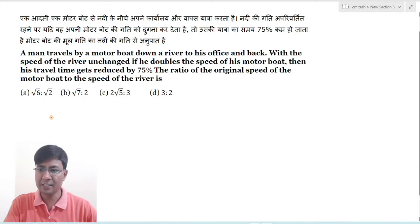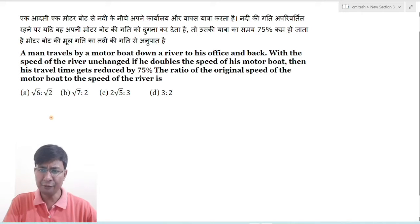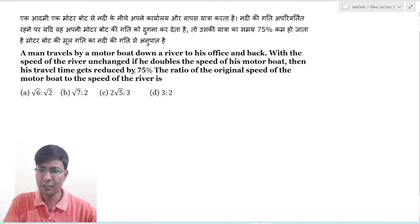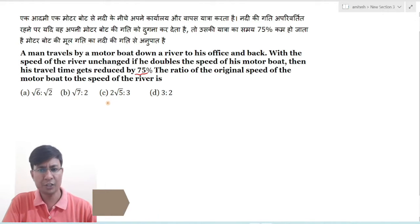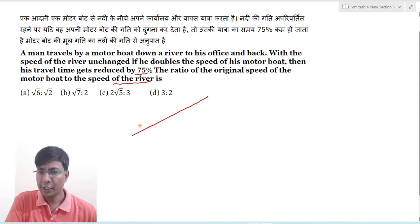A man travels by a motor boat down a river to his office and back, with the speed of the river unchanged. If he doubles the speed of his motor boat, then his travel time gets reduced by 75 percent. The question is: what is the ratio of the original speed of the motor boat to the speed of the river?